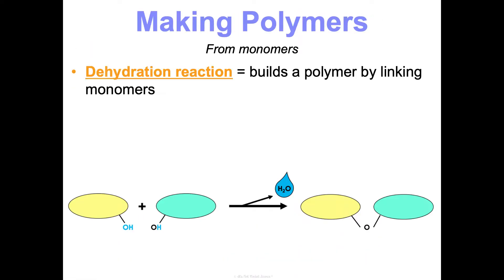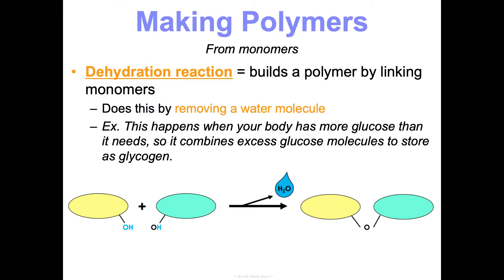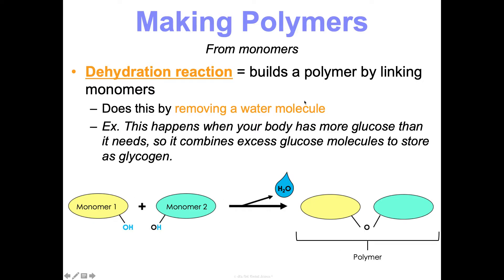So how do we make polymers from monomers? It's called a dehydration reaction, or a dehydration synthesis reaction. It builds a polymer by linking together monomers by removing a water molecule. One example of when this happens is when your body has more glucose than it needs — it'll combine excess glucose molecules and store them as glycogen. In the diagram, we pull the OH from one monomer and the H from another to get H₂O, and that oxygen bonds the two monomers together into one polymer.